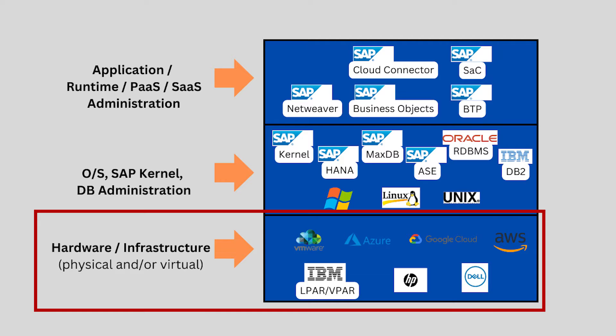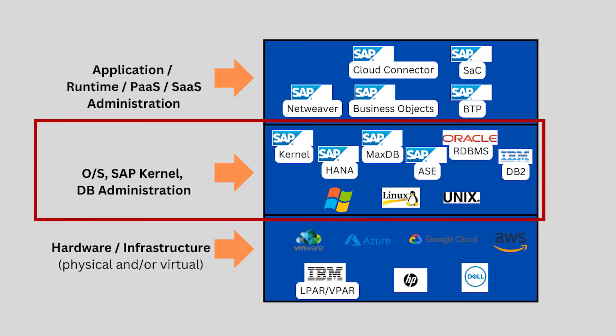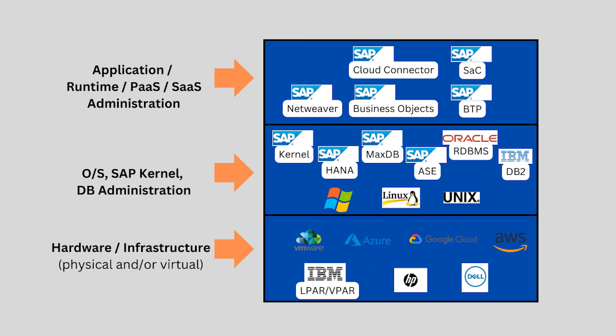As a reminder, we described the two different categories of basis used internally within SAP. Technical basis is the name given to the technical layers of SAP such as infrastructure, operating system, kernel, and database. Application basis is the name given to the application stack administration such as NetWeaver or S4HANA application layers.